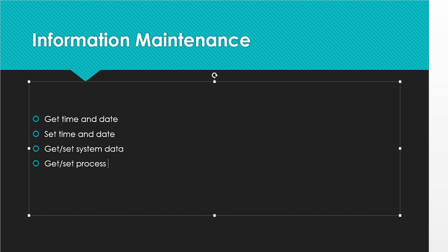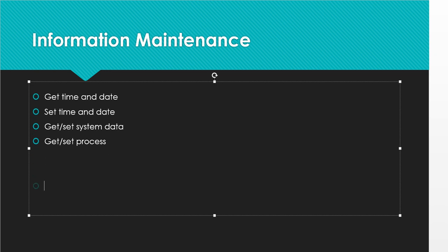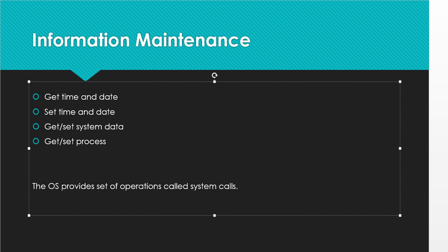The operating system provides a set of operations called system calls. Finally, we can define a system call like this: the OS provides a set of operations which are called system calls. A system call interface is a description of the set of system calls implemented by the operating system.